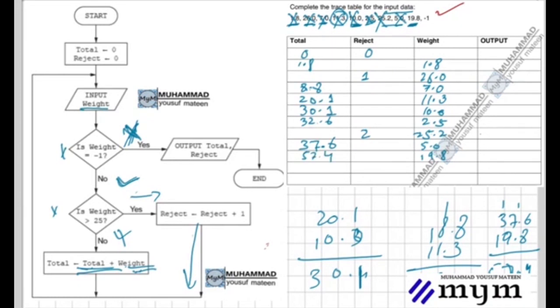After 19.8 is consumed, we have minus one. When weight is minus one, we output total and reject. The total is 57.4 and reject is 2. So the output is 57.4 comma 2. This is the answer.